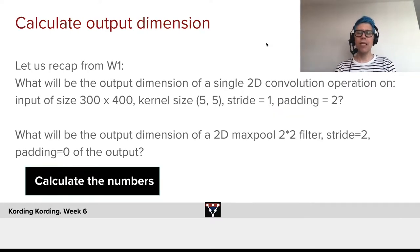Now, let's look a little bit at the output dimensions. And this is part of a recap of week one. What will be the output dimensions of a single two-dimensional convolution operation that has an input of size 300 times 400, a kernel size of 5 by 5, a stride of 1, and a padding of 2.